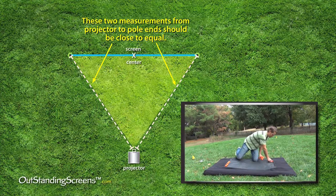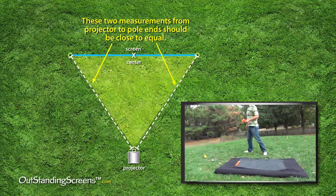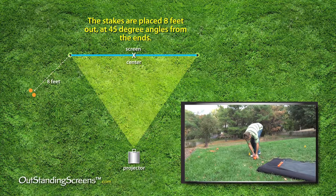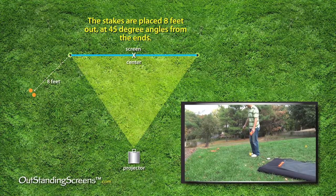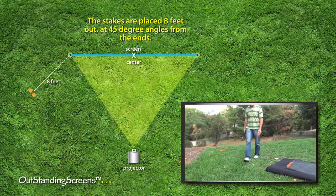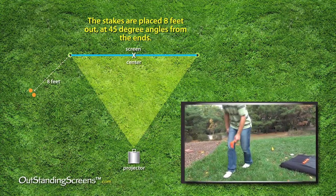Open the carrying case and pull out four stakes. Walk to one end of the screen. From that end point, two stakes go towards the front of the screen and two stakes towards the back. Optimally, the stakes should go out 8 feet and at 45-degree angles from the ends.